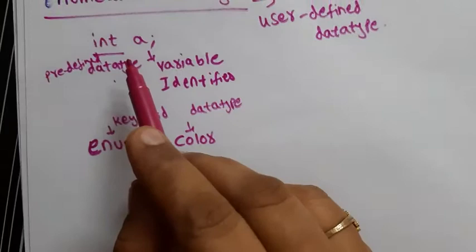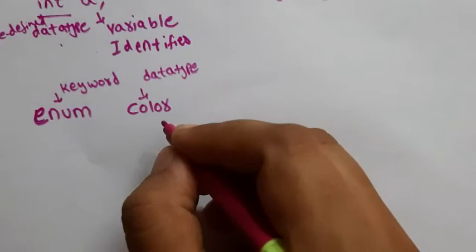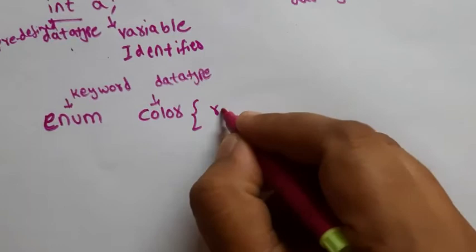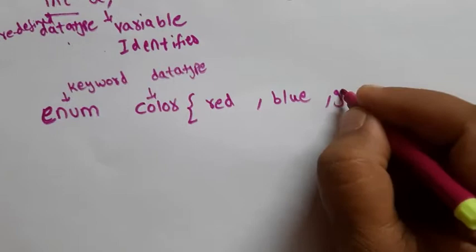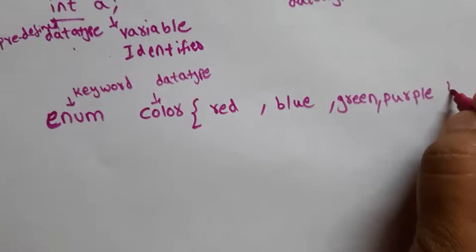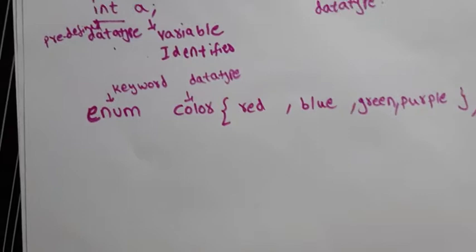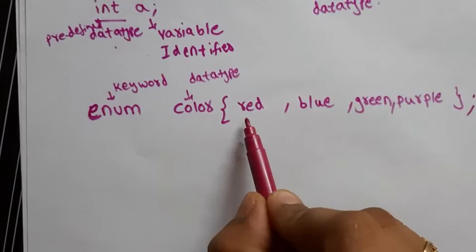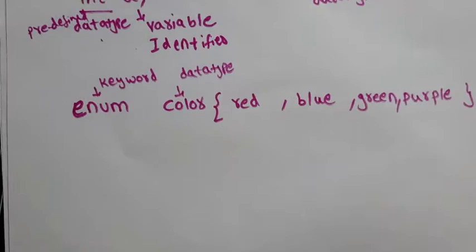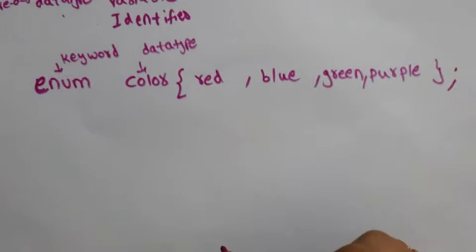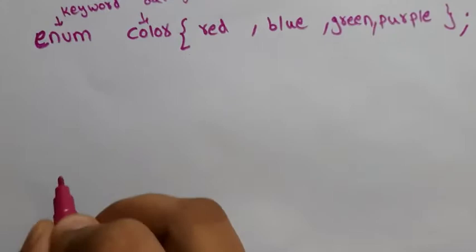For integers you have a list of integer values. Similarly, for my color data type, I can list the values it can have. Color can be red, blue, green, purple — you list them inside curly braces followed by a semicolon. So color is a data type for which you have the list of values: red, blue, green, and purple.